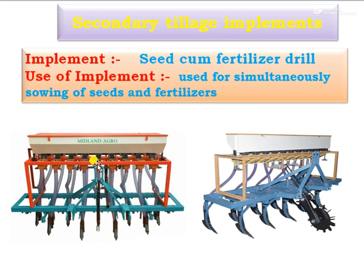This is the detail about the primary and secondary tillage implements which are used especially for the cultivation of crops. Thank you.